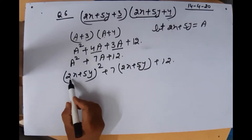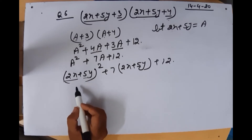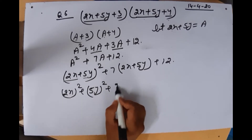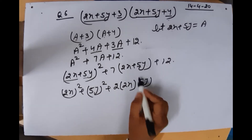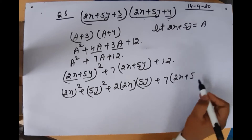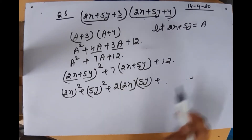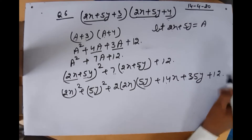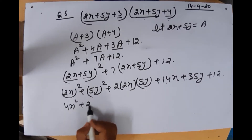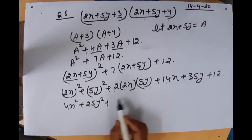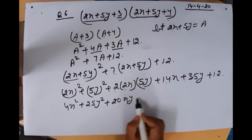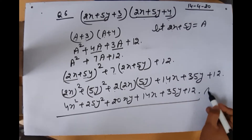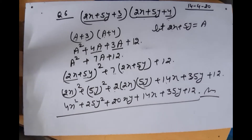Now expanding (2x + 5y)² using the identity (A + B)² = A² + B² + 2AB, we get 4x² + 25y² + 20xy. Then expanding 7(2x + 5y) gives 14x + 35y. So the final answer is 4x² + 25y² + 20xy + 14x + 35y + 12.